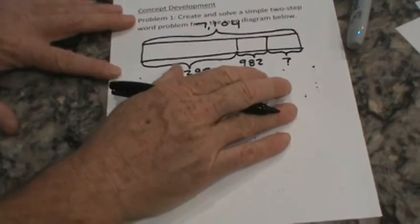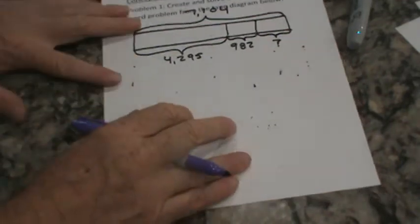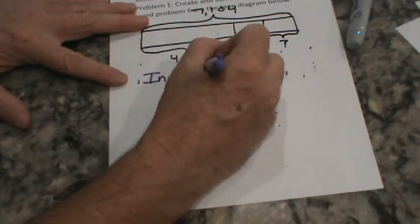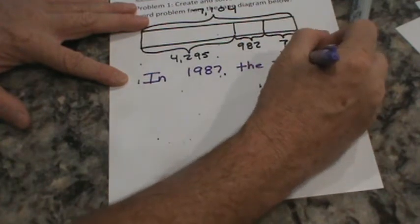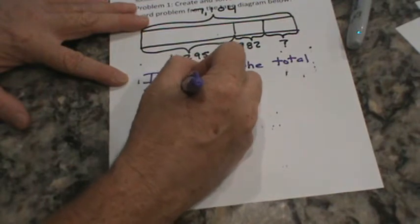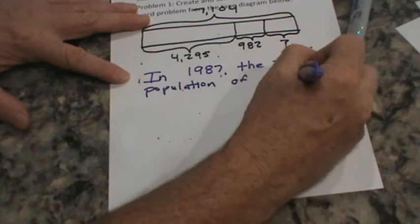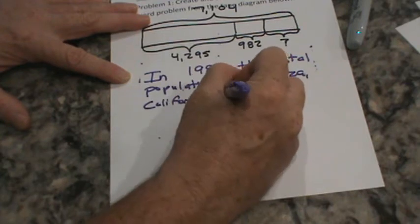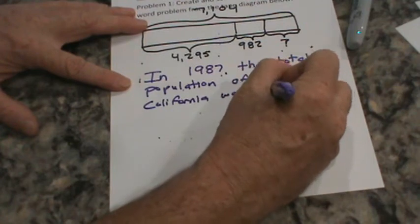So let's make up a word problem that's kind of exclusive to our area. Let's say, and I'm just kind of guessing off the top of my head. I don't really know this. In 1987, the total population of Anza, California, was 7,104.